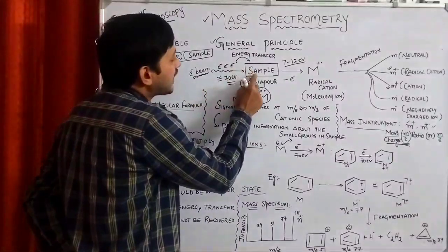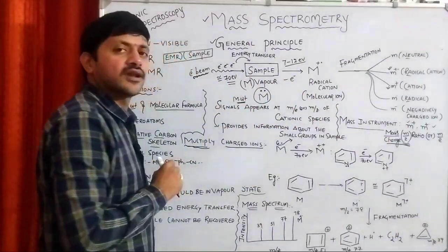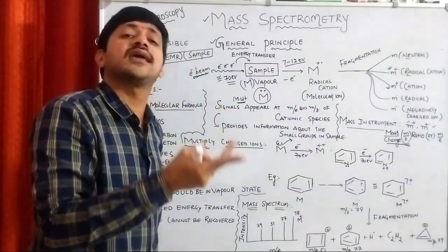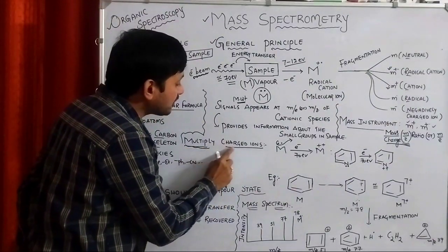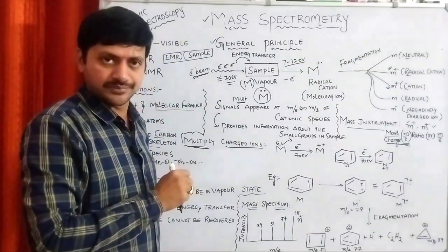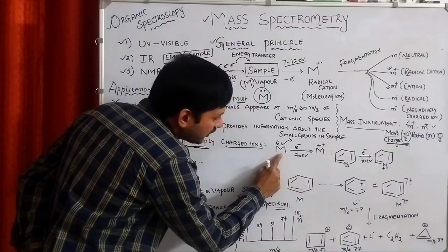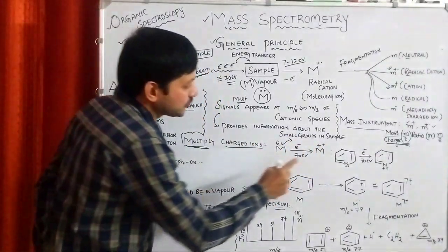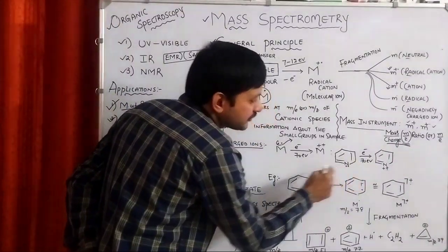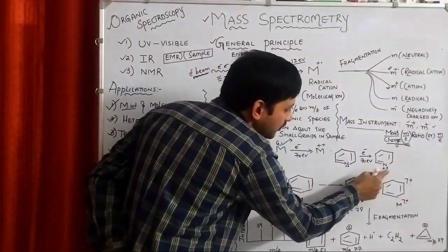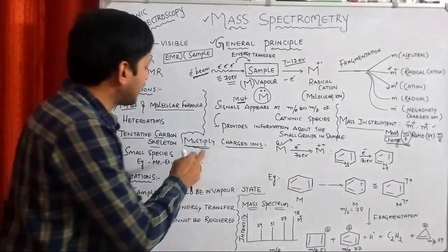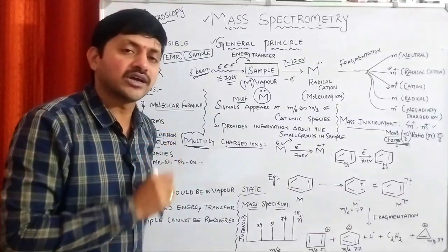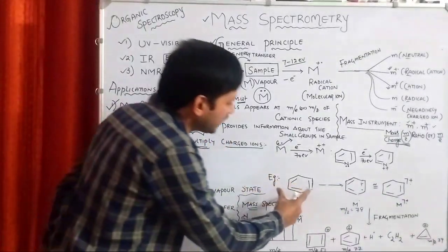There is a term called multiply charged ions. Initially from the sample we removed a single electron to create a molecular ion with one positive charge. But by supplying more energy, more than one electron can be removed — these are called multiply charged ions. This is especially observed in aromatic or cyclic compounds. For example, from pyridine, two electrons can be removed, producing a doubly charged ion (2+). These are commonly called multiply charged ions.